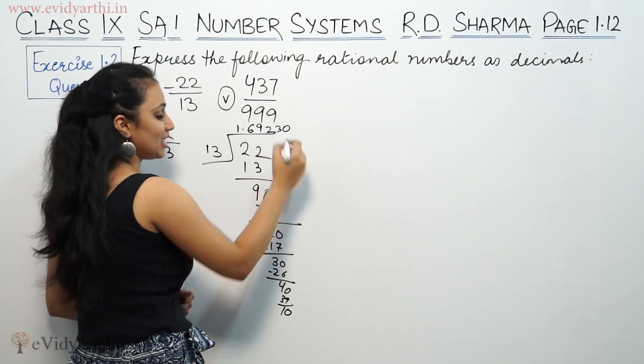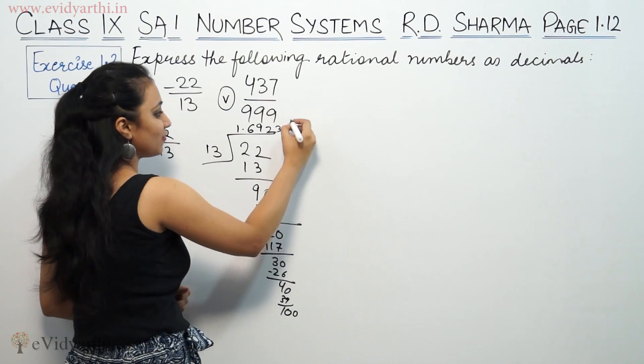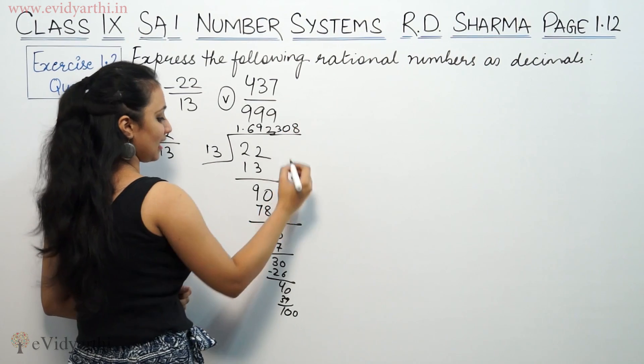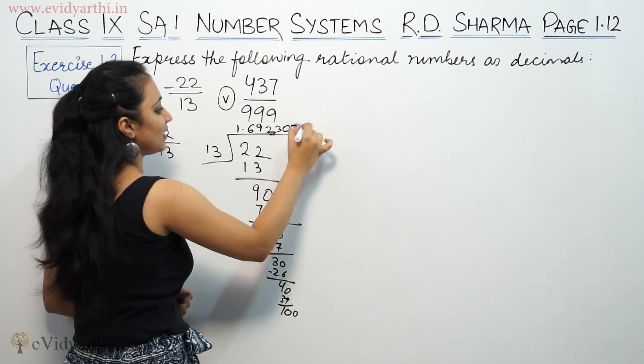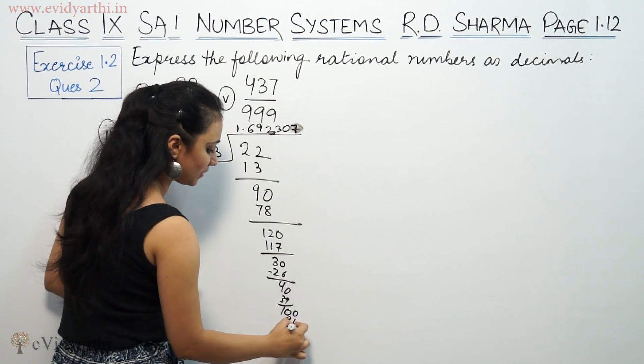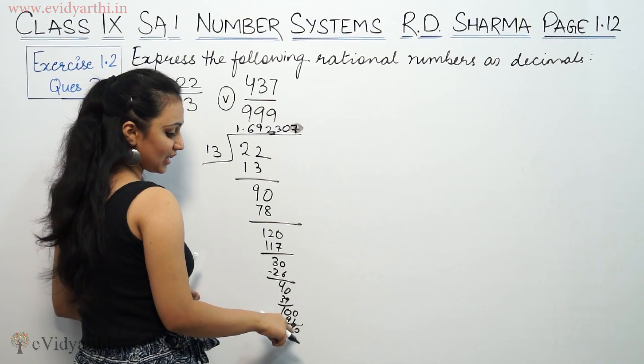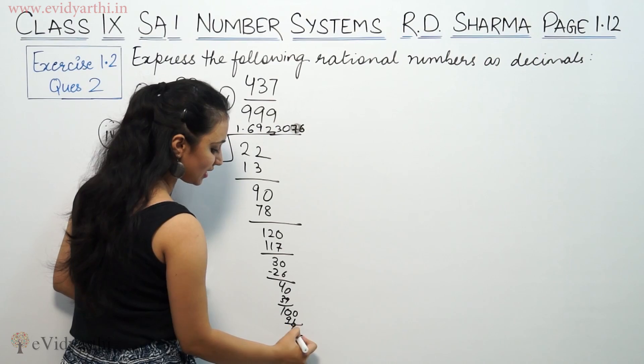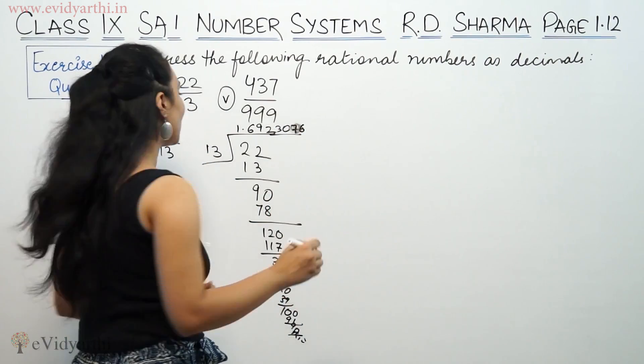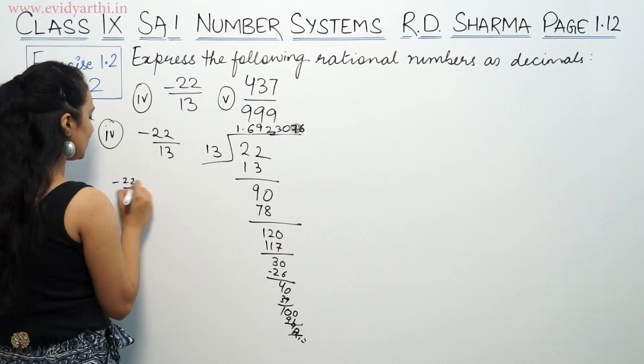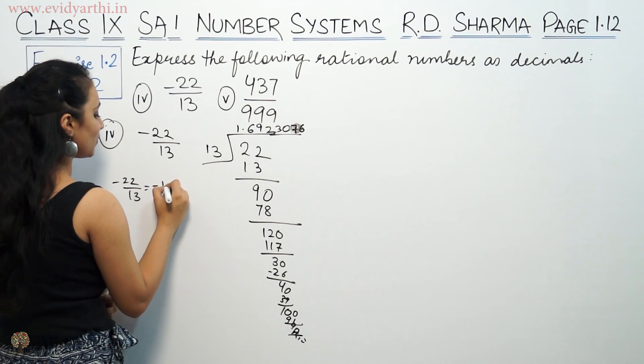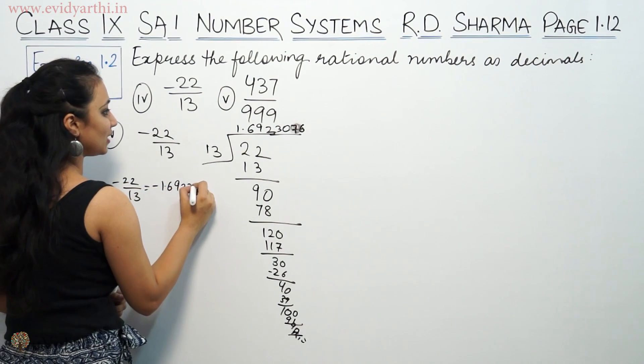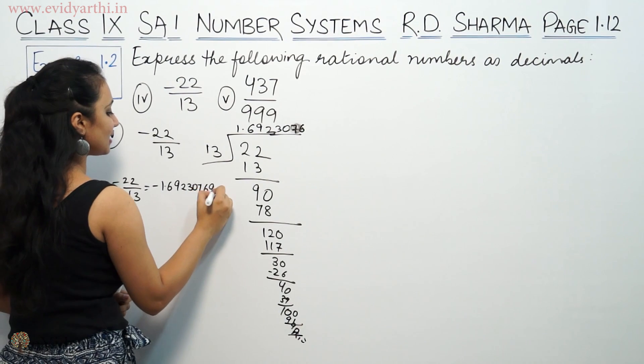Since we need decimals, we put a decimal point. Then 13 times 7 is 91, so 7 goes here. 91 minus 90 gives 1, bring down zero to get 100. 13 times 7 is 91 again. 100 minus 91 is 9. Again 90 comes, so 13 times 6 is 78, giving us 12.